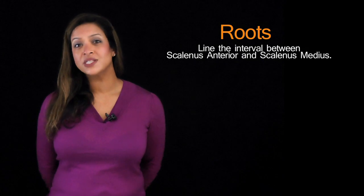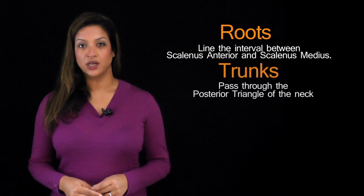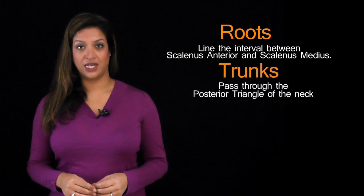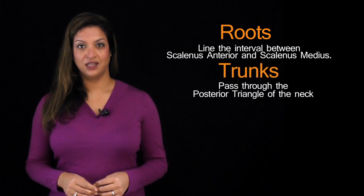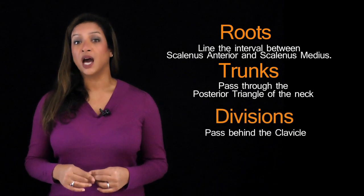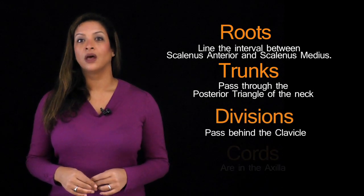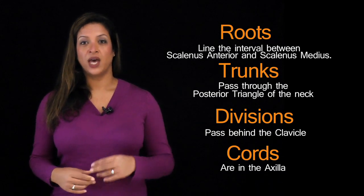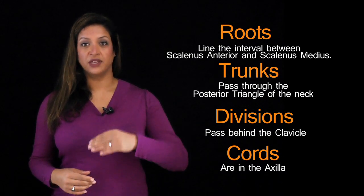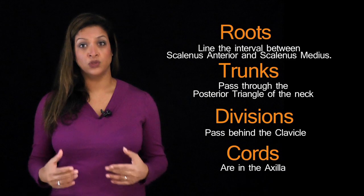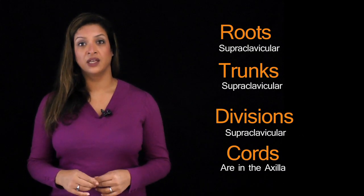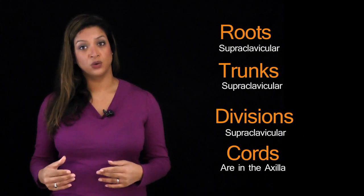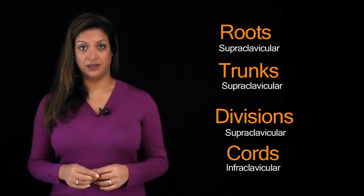The roots line the interval between the muscles scalenus anterior and scalenus medius. The trunks pass through the posterior triangle of the neck, the divisions are behind the clavicle, and the chords are in the axilla. So anything above the clavicle — the roots and trunks — are supraclavicular, and anything below, which is the chords, are infraclavicular.